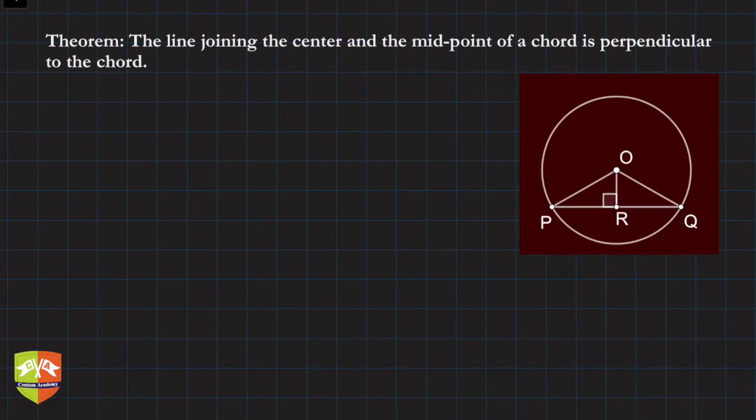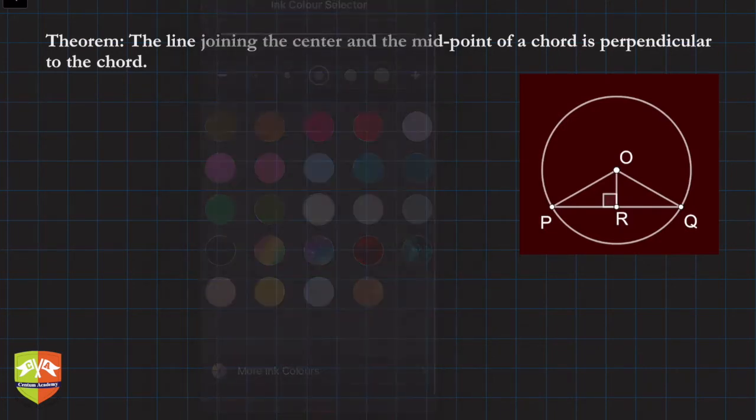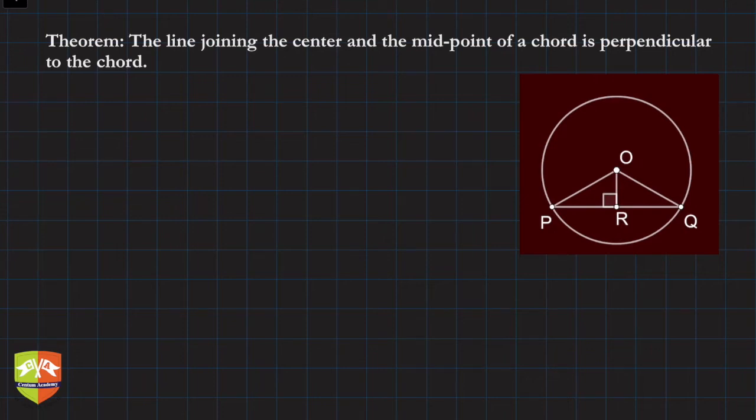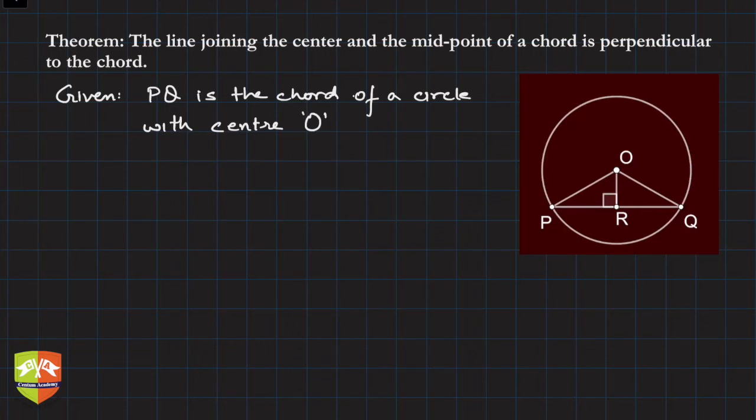Though I have shown it to be perpendicular already, I will not be starting from there. R is the midpoint, so let me start with the proof straight away because it's a very simple proof. First we write given: it is given that PQ is a chord of a circle with center O, and R is the midpoint of chord PQ.